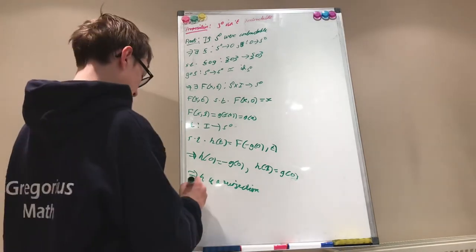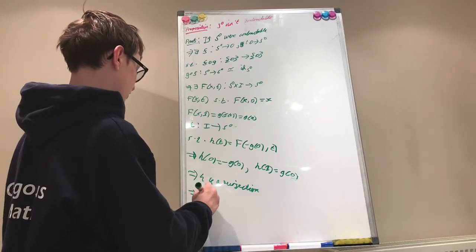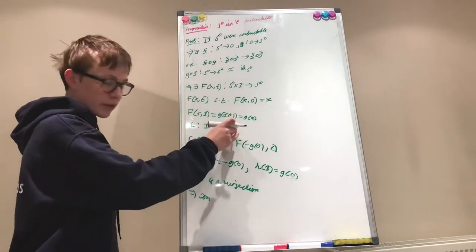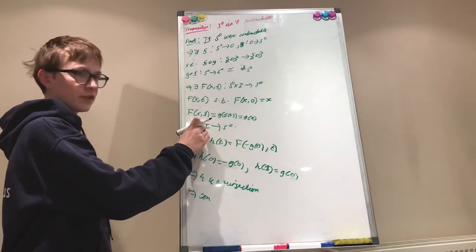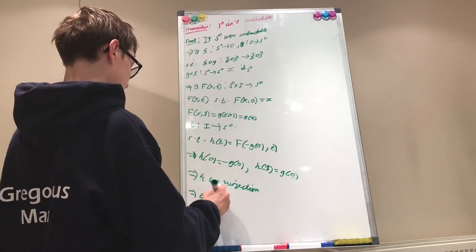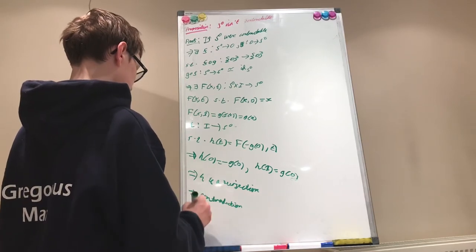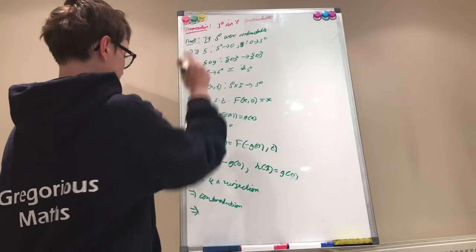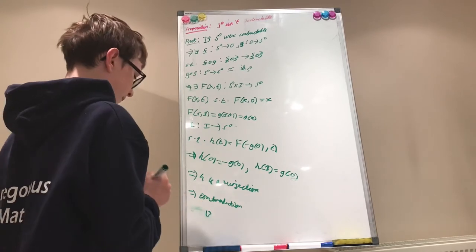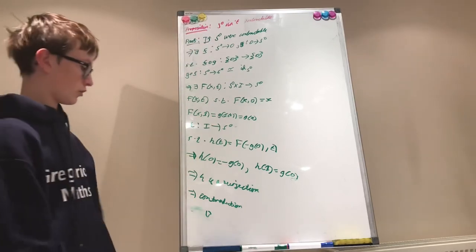And therefore, because H is a surjection, we've arrived at a contradiction. Because the 0-sphere is not connected, and the closed interval between 0 and 1 is connected, we can't have a continuous surjection between them. Contradiction. And that was a typical example of how we can show that the 0-sphere is not contractible.